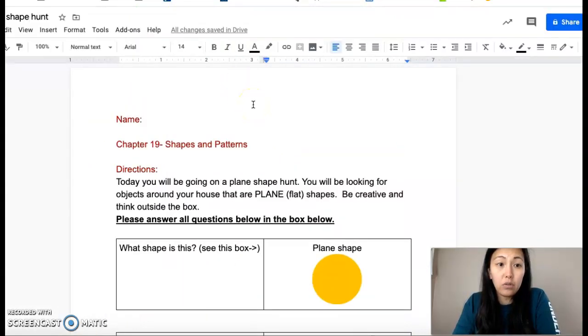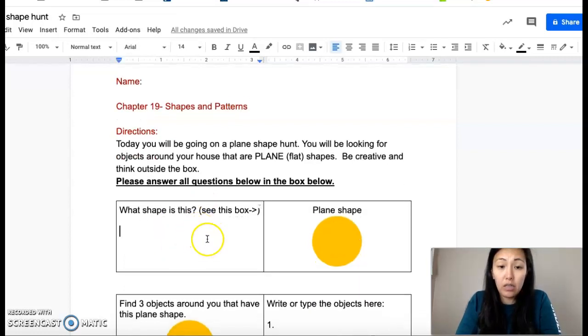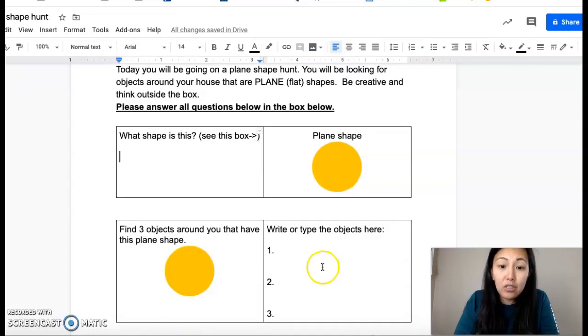For today you will be going on a plane shape hunt around your house. And what you need to do is you're going to take each question and answer it in this box here. You're going to tell me what plane shape is this. I think you know what it is. Good, a circle. Then you're going to find three objects around your house that have a circle. Now remember, is a ball a plane shape?